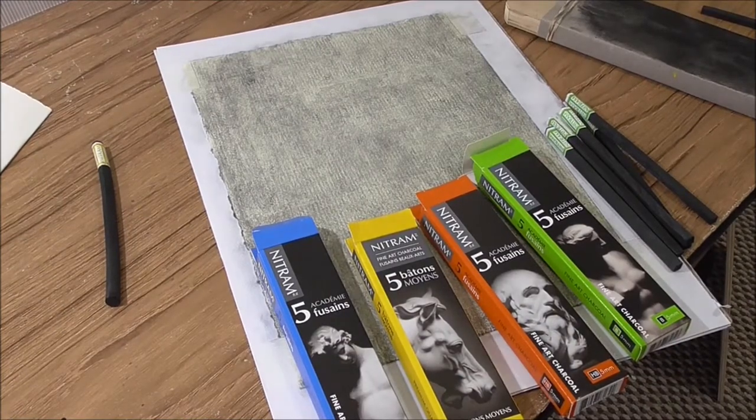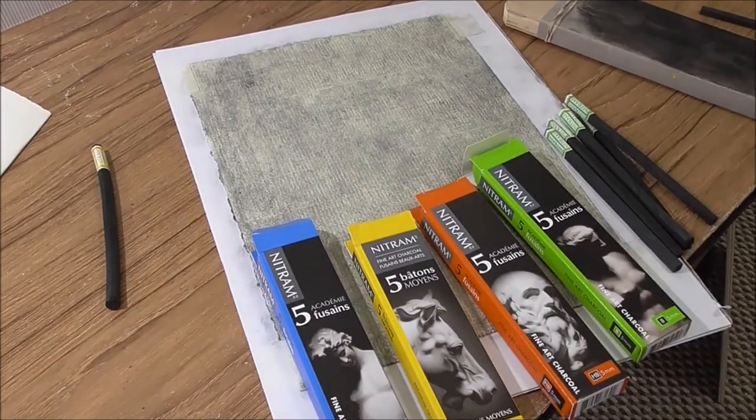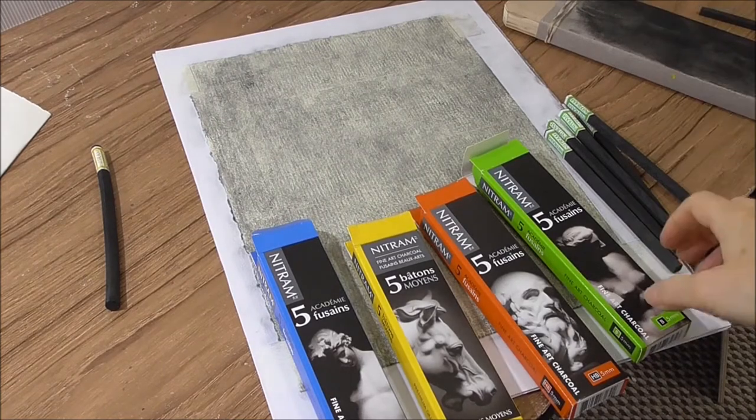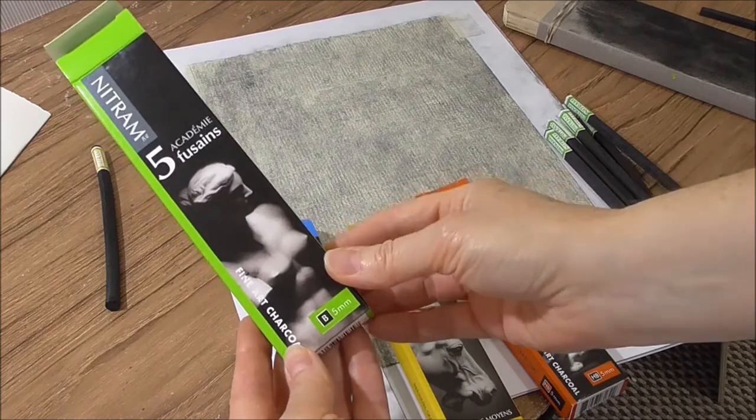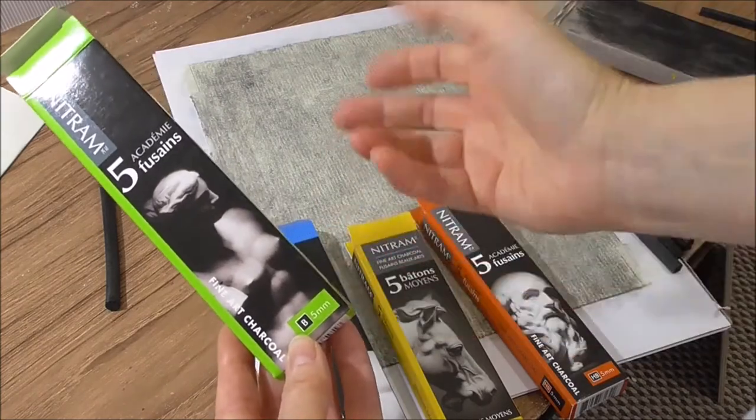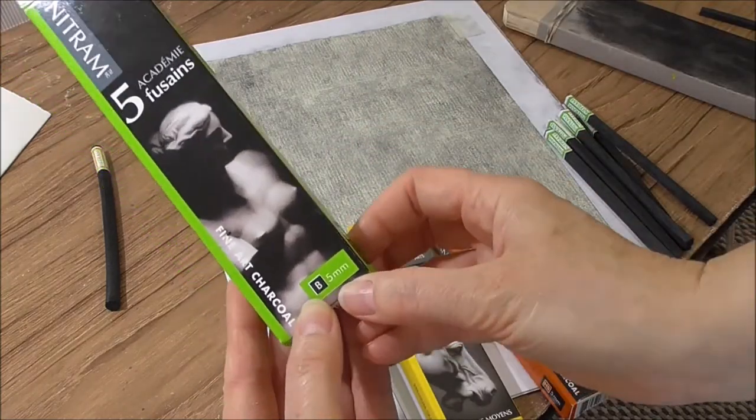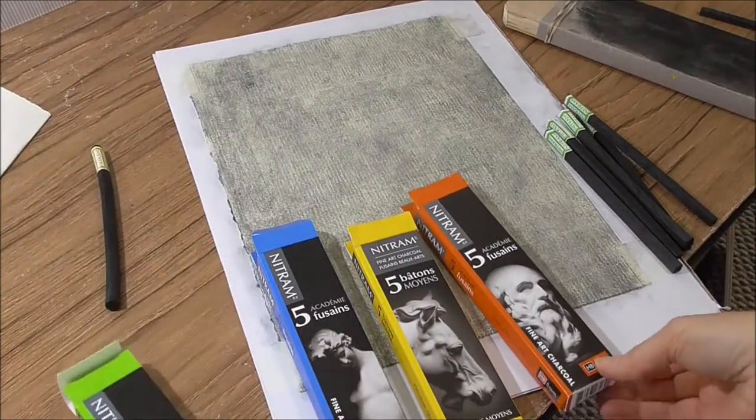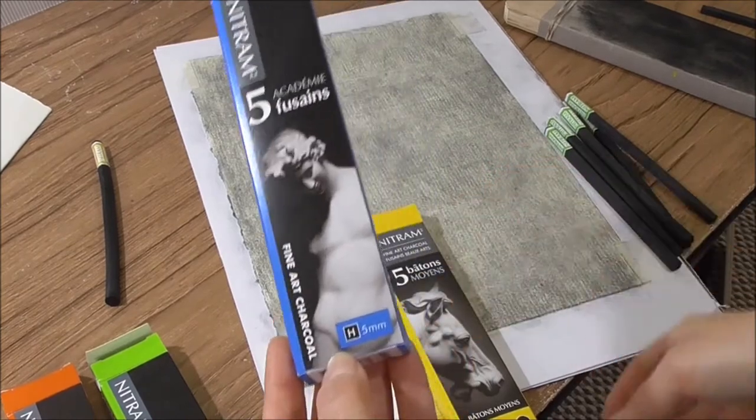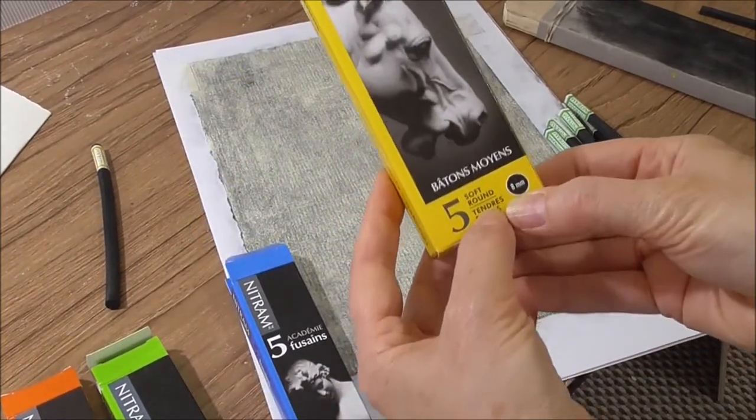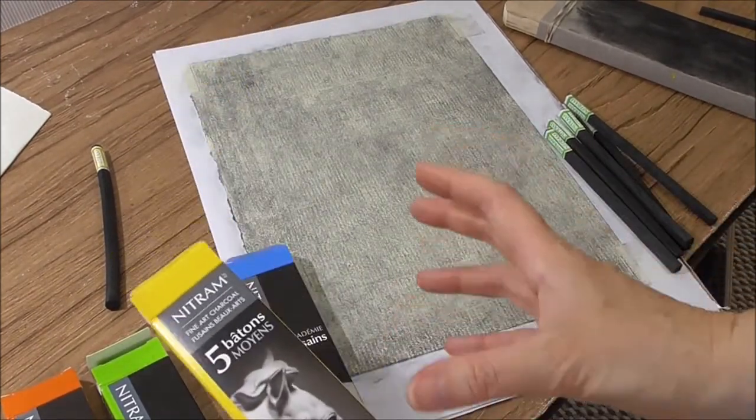Okay, just to explain a bit more about nitram, fabulous charcoal, I think it's probably the best charcoal I've ever used. It comes in different softnesses or hardnesses. There's B, then there's HB, then there's H, which I'll be using in a sec for my drawing. And then there's the soft round. And they also come in different sizes.